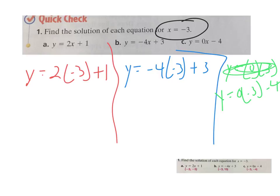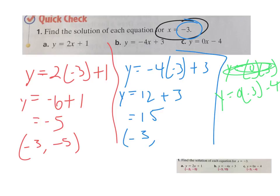All righty. So back to the first one then. I'm going to actually go through and work them out. We have y equals 2 times negative 3 plus 1. But 2 times 3 is negative 6 plus 1, which is then negative 5. So to write the answer as an ordered pair, that's going to be negative 3, negative 5.